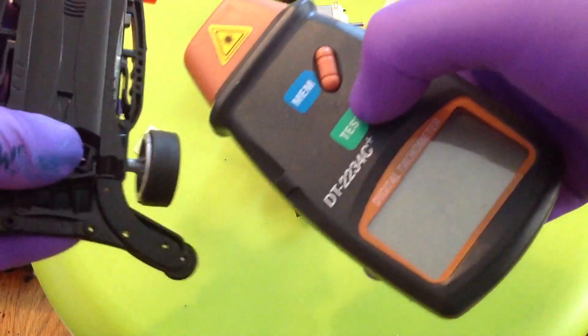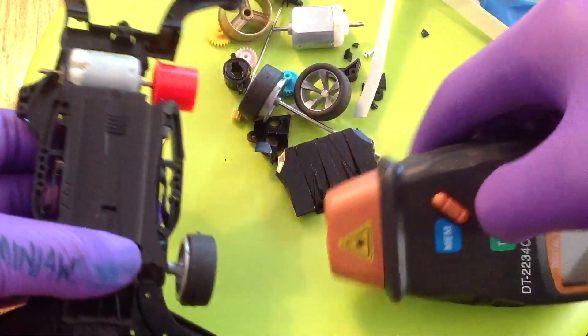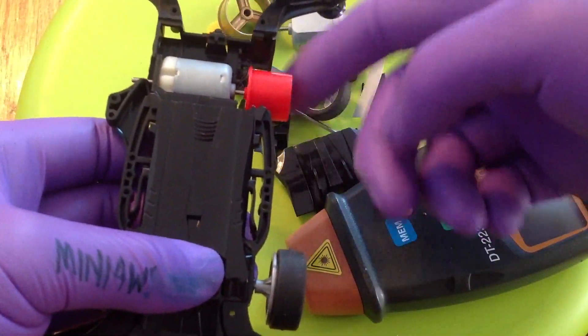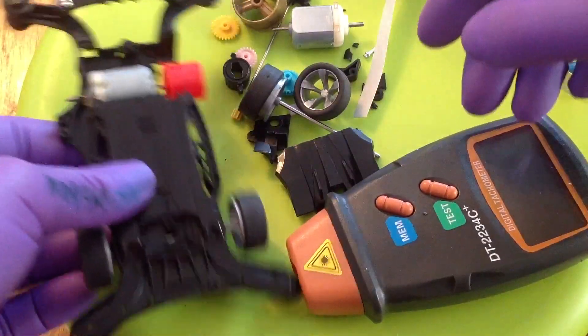As you can see, the cheater motor is up to 24,294 RPMs and throws the tape off the wheel again.